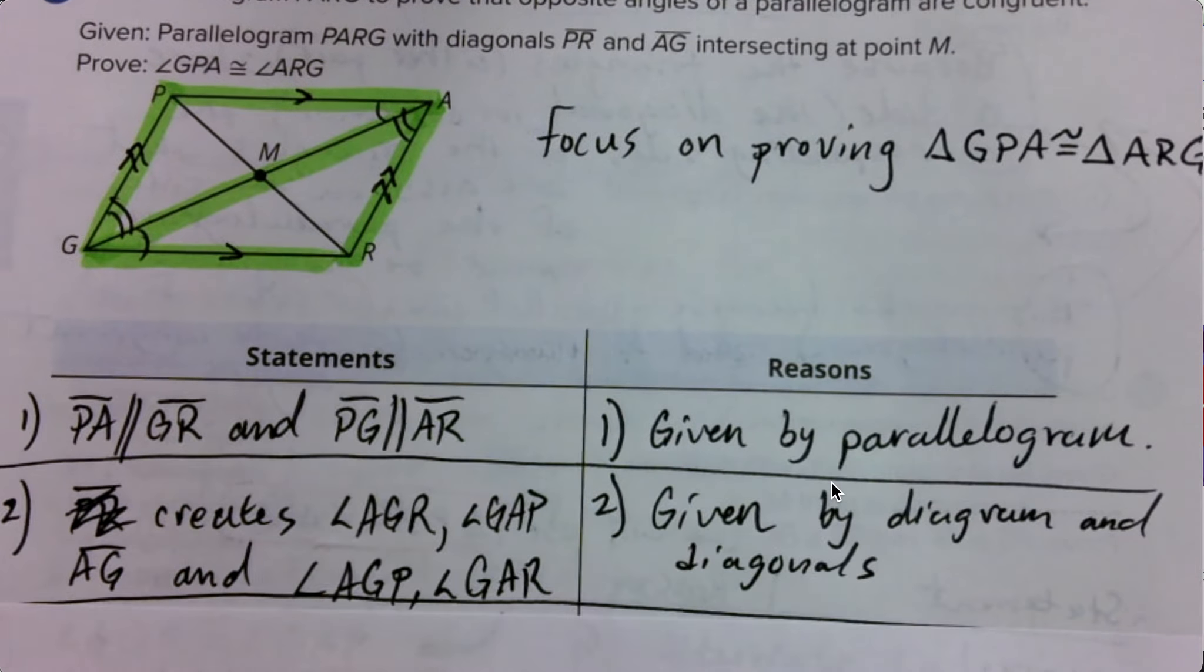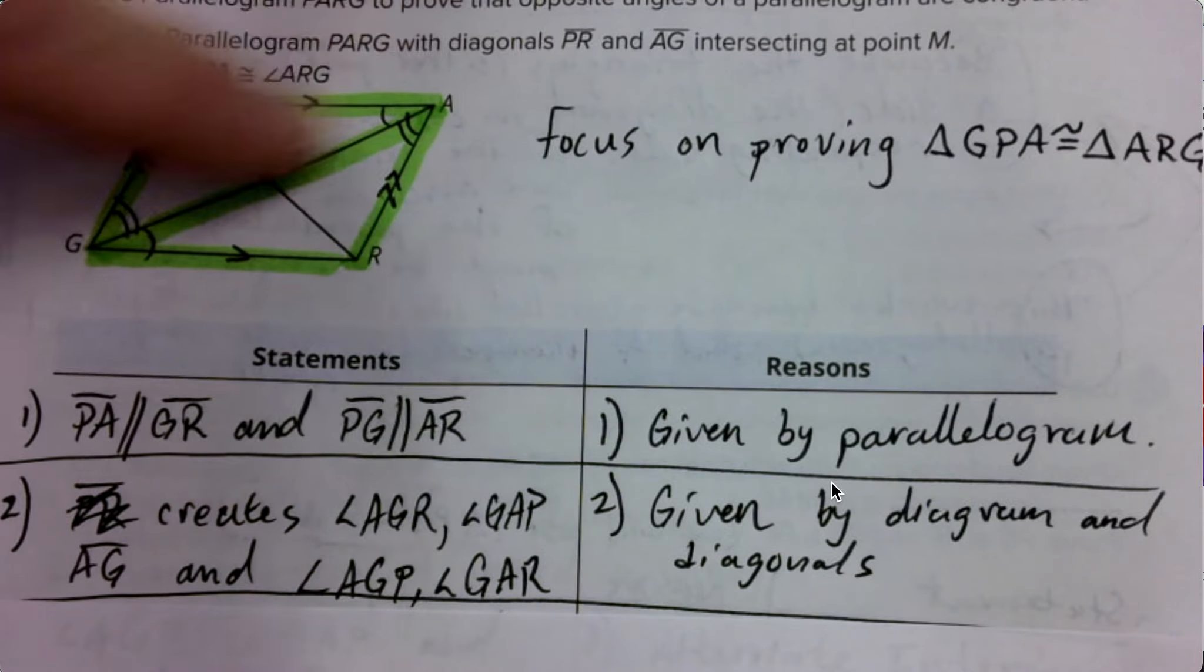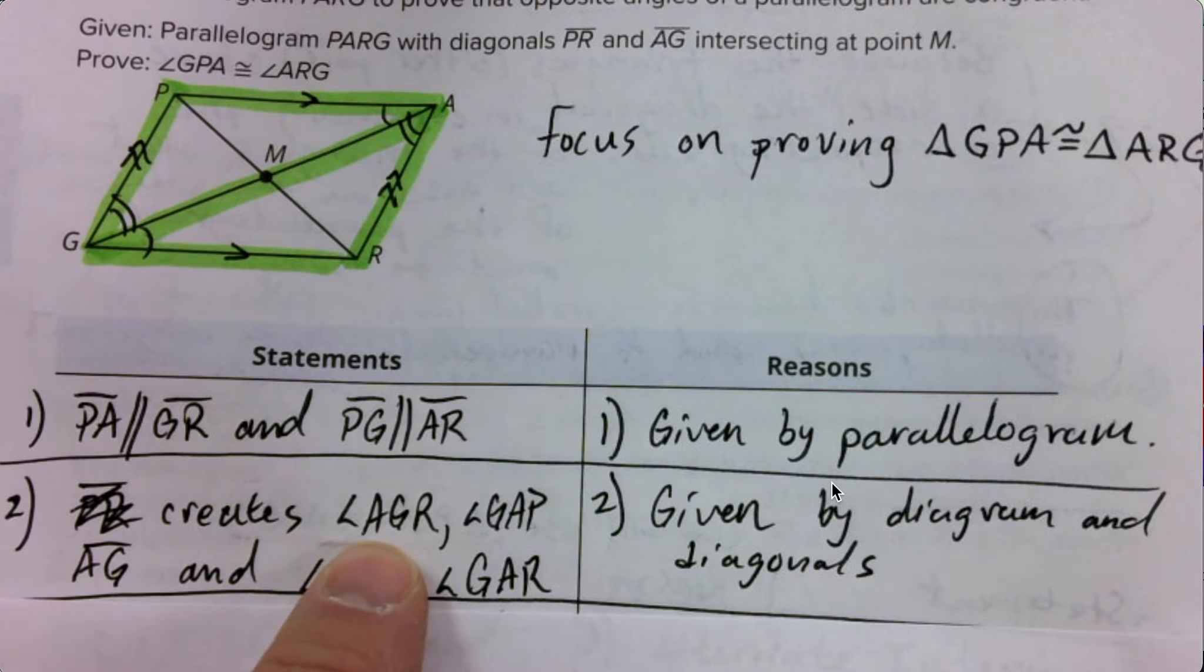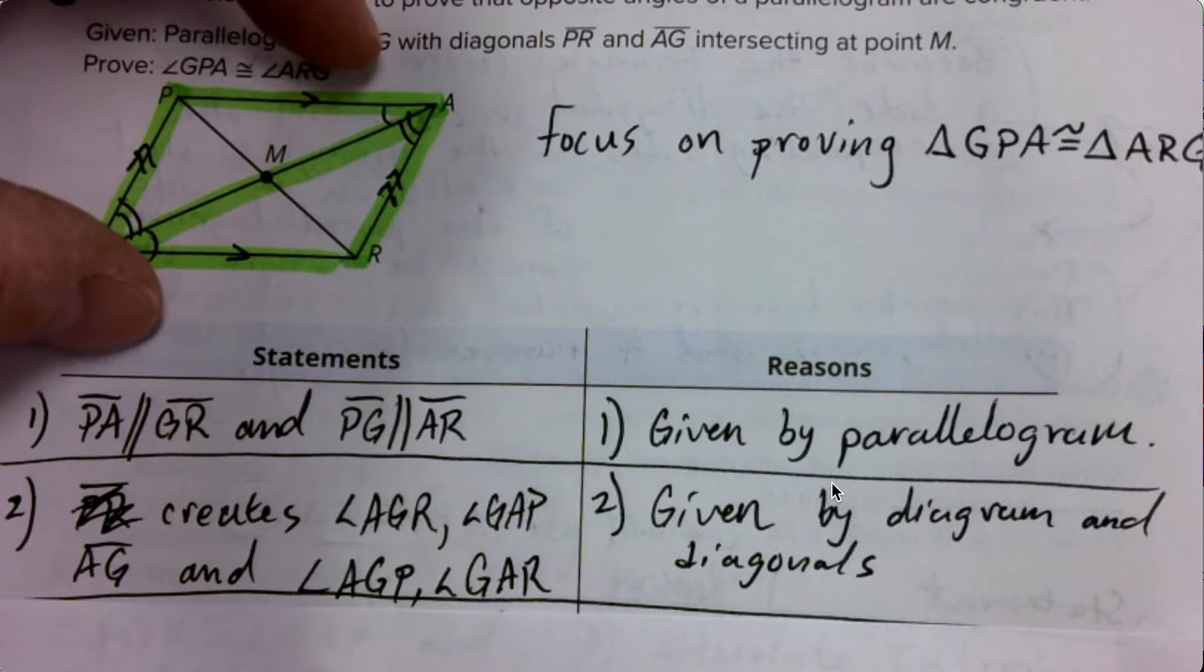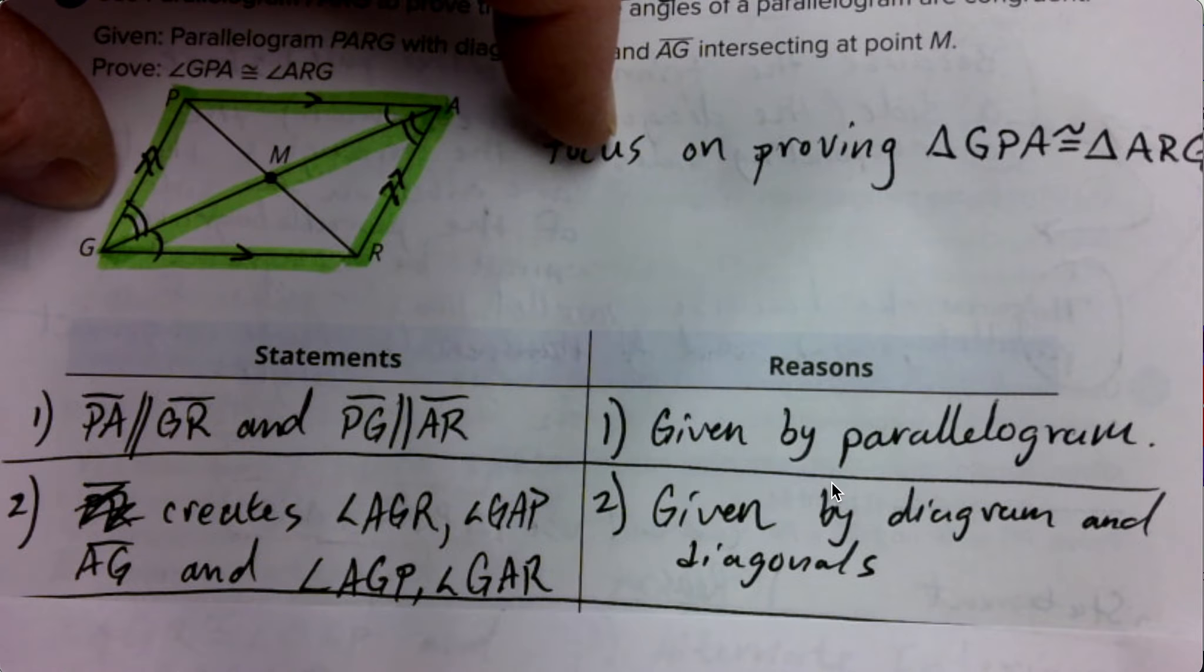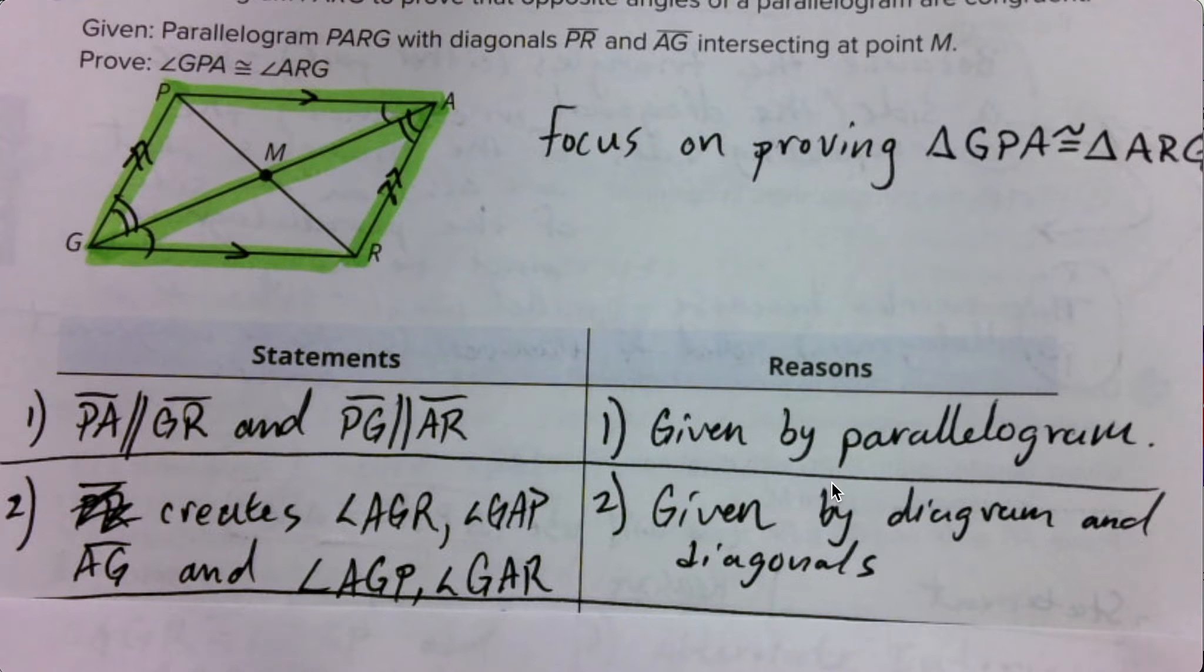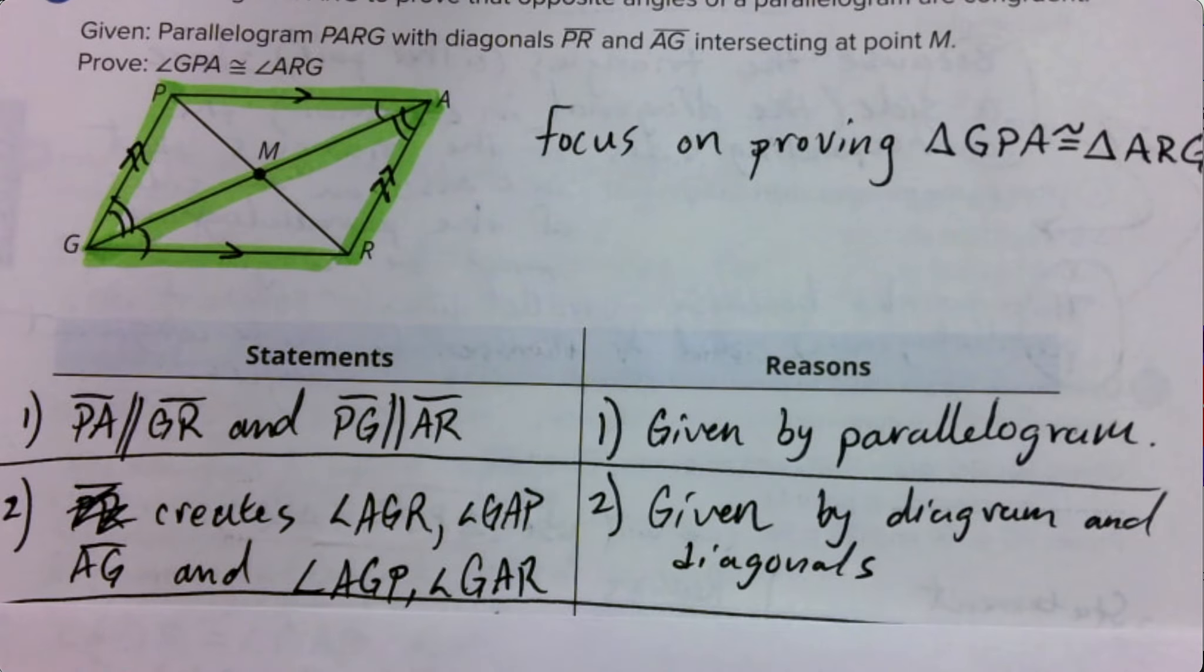And also, this line, I started writing PR. I didn't write PR. I meant AG. AG is this transversal that actually ends up creating, see one marker and one marker, those angles, AGR and GAP. And then two markers, these over here, that's AGP and GAR, these two and these two. Those are just there. They're given by the diagram and the fact that a diagonal was used to create them.